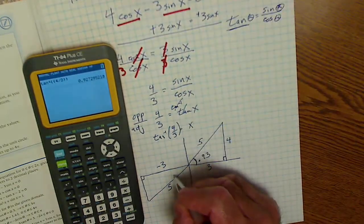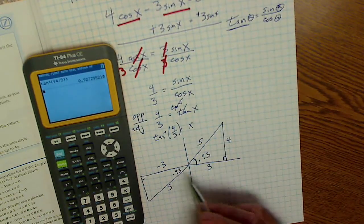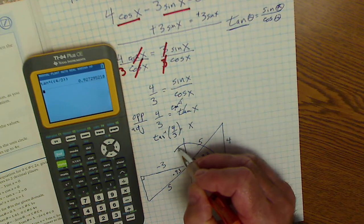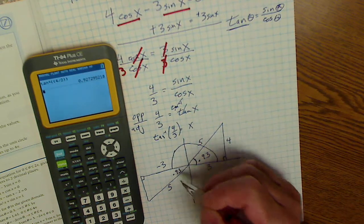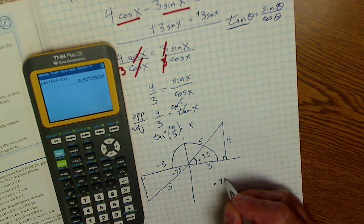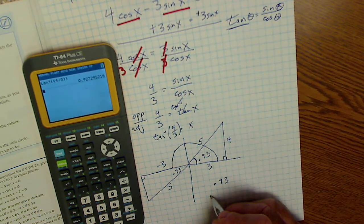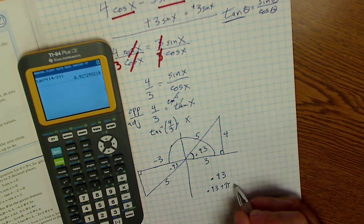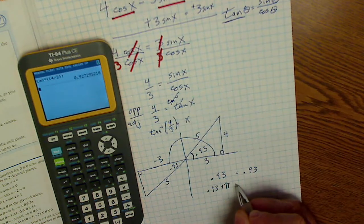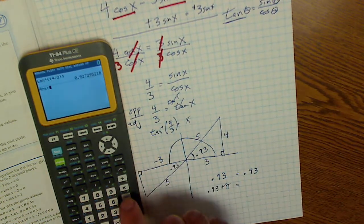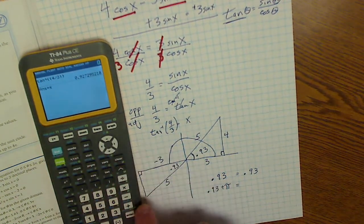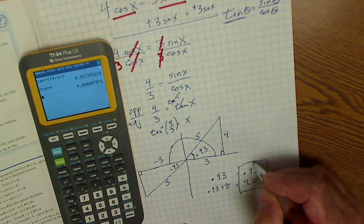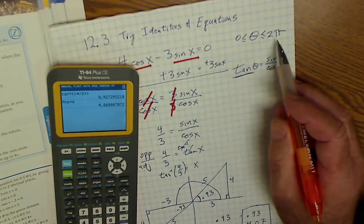This reference down here is also 0.93. But I want to know the actual angle. So I start here, I rotate around 90 or pi over 2, pi plus 0.93. So my first solution is 0.93. My second solution is 0.93 plus half a cycle pi. So this is 0.93 and this is 3.14 plus 0.93 or 4.07. So those are my two solutions in this domain of 0 to 2 pi.